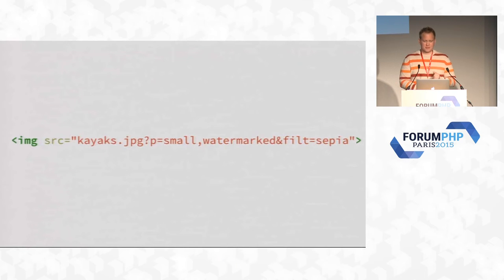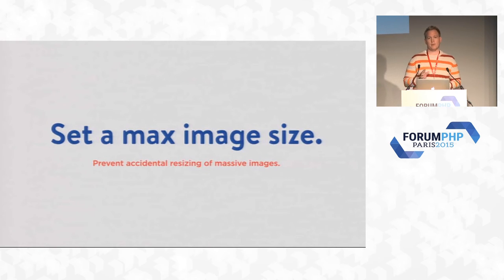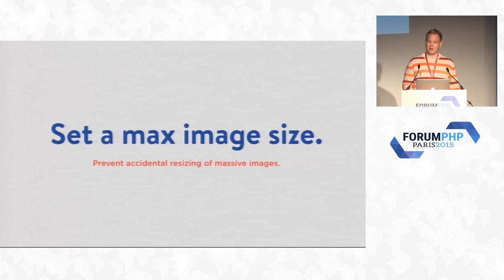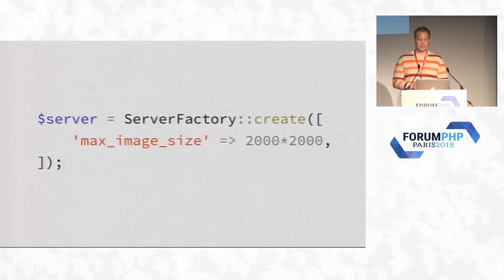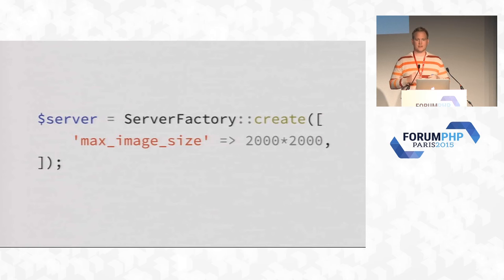Another feature — more of a protection mechanism — lets you minimize how large an image can be. You can set max image size to 2,000 by 2,000 pixels, which works out to 4 million pixels. It doesn't care which is width or height; it just says the image can't be any larger than 4 million pixels total. So if you accidentally type a thousand pixels wide, it won't crash your server or timeout.